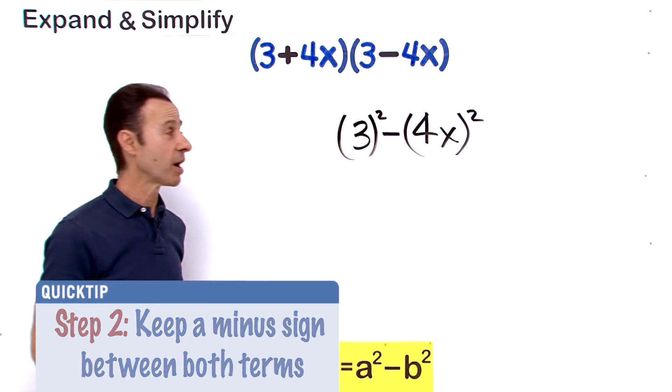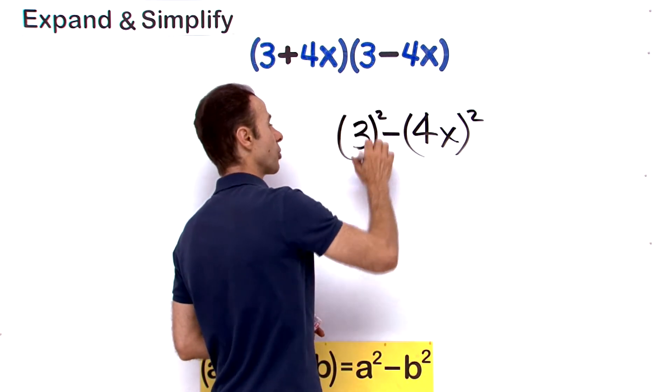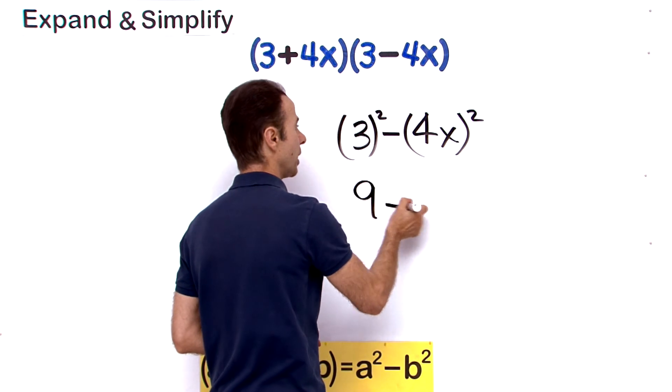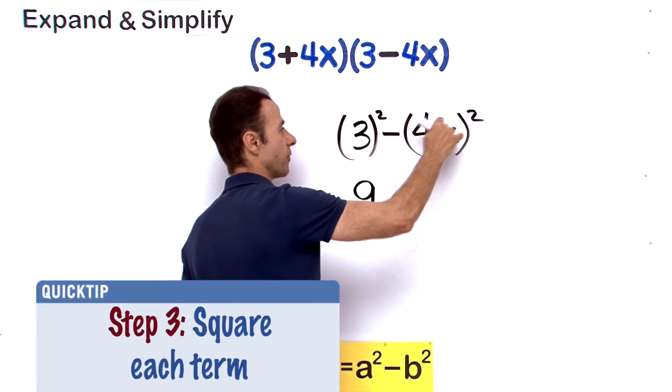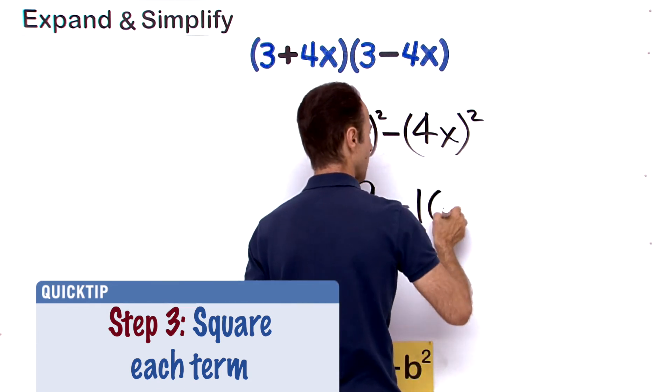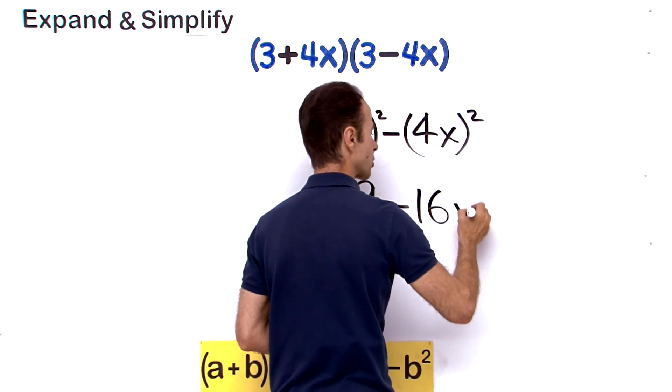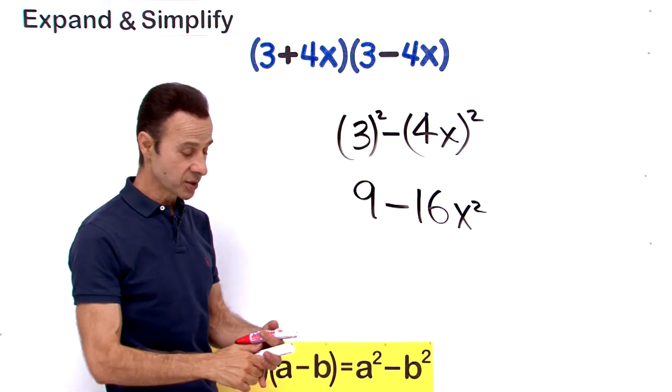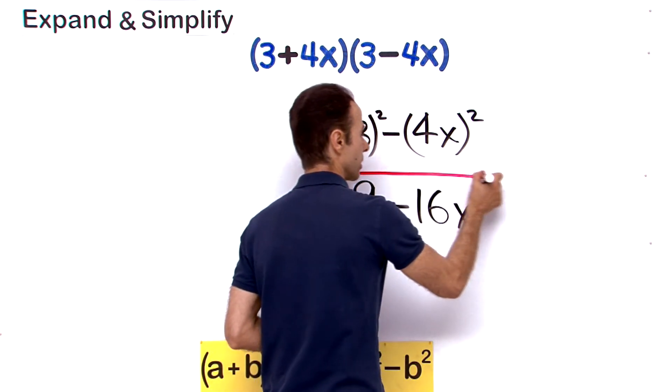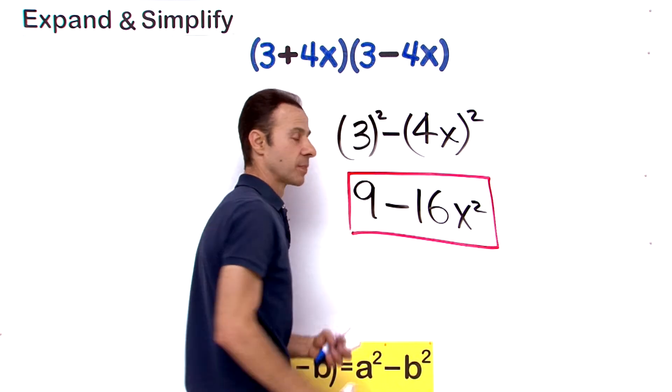Now let's apply the squared. 3 squared makes it 9 minus... now the squared applies to the 4 and to the x, so 4 squared is 16 and x squared is just x squared right there on the end. So the answer is 9 minus 16x squared, and there you go.